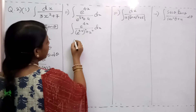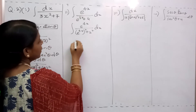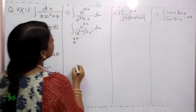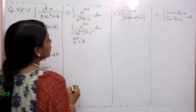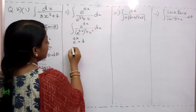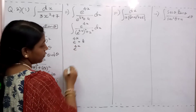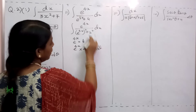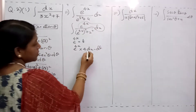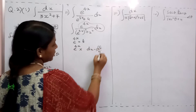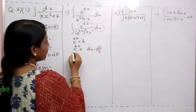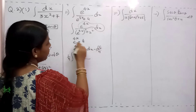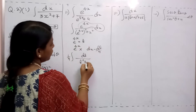Now this is in which format? The same way — you can assume e^(4x) as t. If you assume e^(4x) as t, now differentiate it with respect to x: e^(4x) · 4 dx = dt. Now my numerator part is e^(4x) dx, so I take the 4 to the right-hand side denominator. So now my numerator becomes dt/4 — take 1/4 outside — divided by what is my e^(4x)? t² + 2².